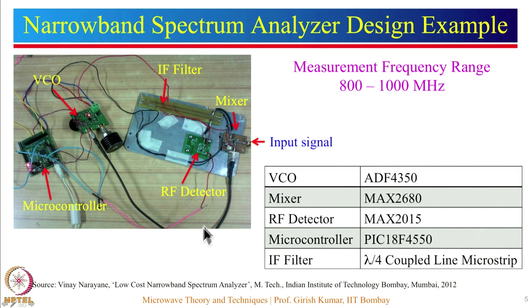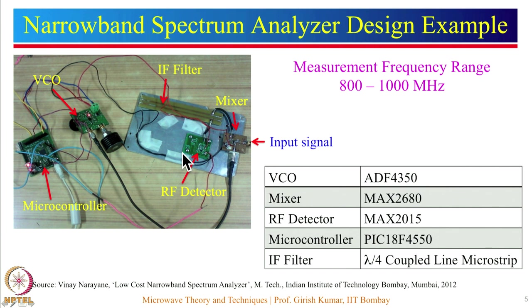The VCO output is given at the LO input of the mixer, implemented using a MAX 2680 IC from Maxim Semiconductors. The input signal is down-converted using this mixer and the LO signal to an IF. An IF filter is implemented using a coupled-line microstrip filter. The IF power level is detected using an RF detector implemented using MAX 2015 IC. All different components are designed using market-available ICs and microstrip techniques studied in this course.